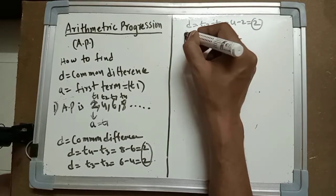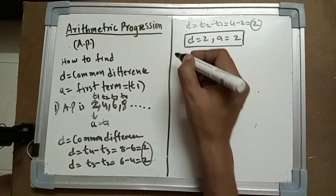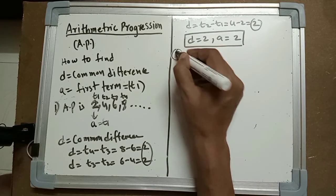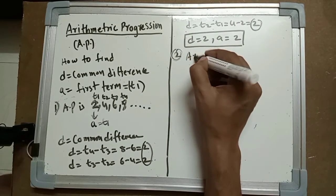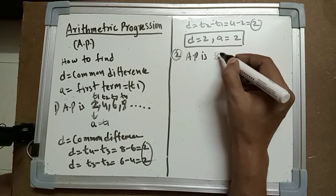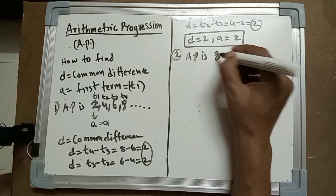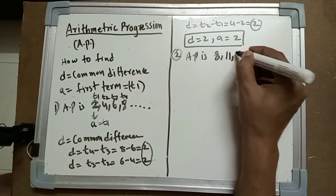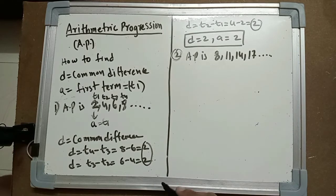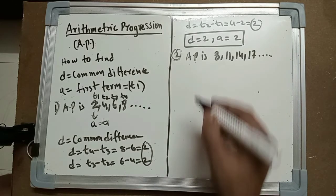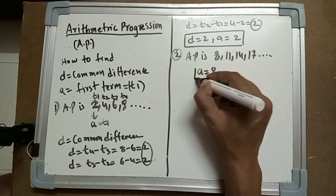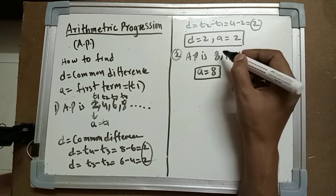I hope you have understood this. Now we will take the next example. The given AP is 8, 11, 14, and 17... Again, we have to find the first term. The first term a is 8.